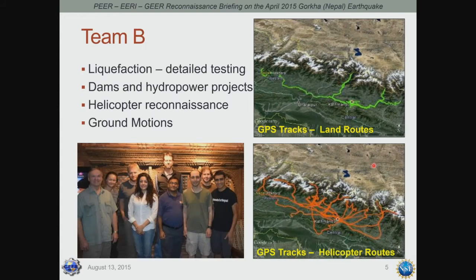After Team A came back, within about a week, Team B deployed. We looked at liquefaction in detail, based on information from the first team. Team B also did extensive reconnaissance on dams and hydropower projects — something unique to this earthquake. We participated in helicopter reconnaissance, joining the USGS team to look at landsliding across the country, which allowed us to access areas we simply could not reach by land. The team also examined ground motions using land and helicopter GPS routes.